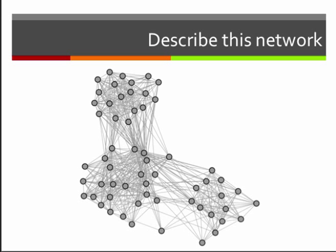There are clearly three clusters that appear: one at the top, one in the middle, and one on the side. But that's about all we can say from this network. We can't give any real insight into what's going on.